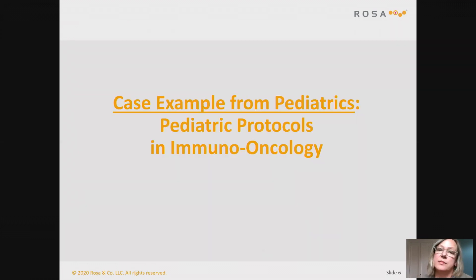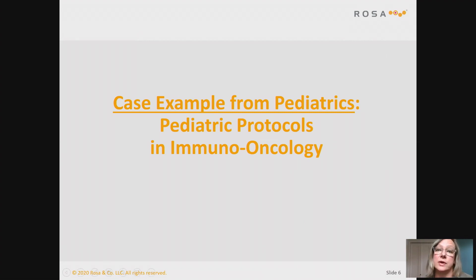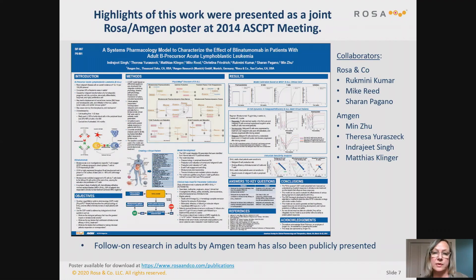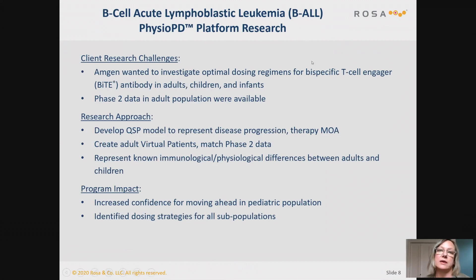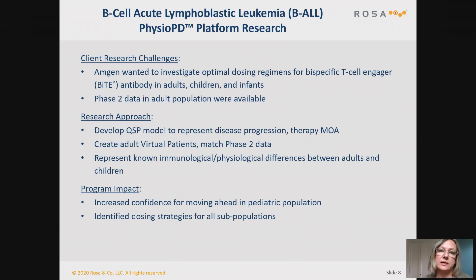I don't have a geriatric case example today, but I do have a pediatric example. I think the approach is quite similar and a similar type of workflow could work well for the geriatric population. In this example — previously presented work that Rosa did with Amgen — the basic challenge was that Amgen wanted to look at optimal dosing regimens for a bispecific antibody they were developing in B-cell acute lymphoblastic leukemia, or B-ALL, and they wanted to look at adults, children, and infants. They had phase two data in an adult population, but not in the pediatric populations.